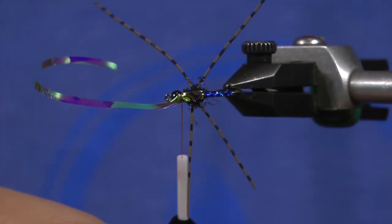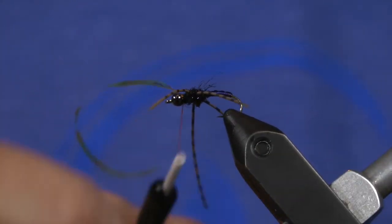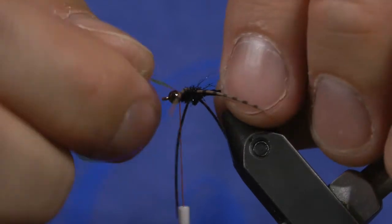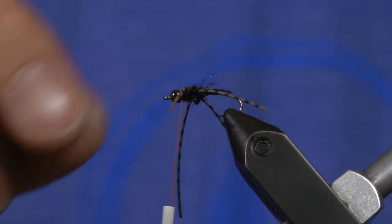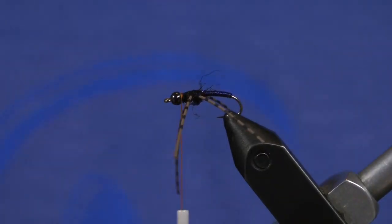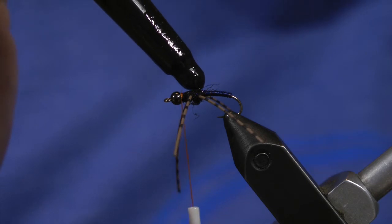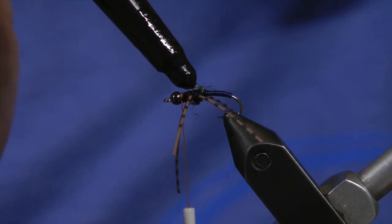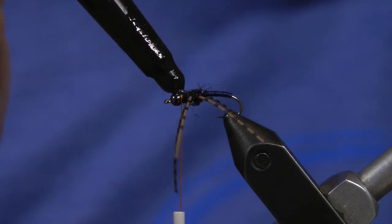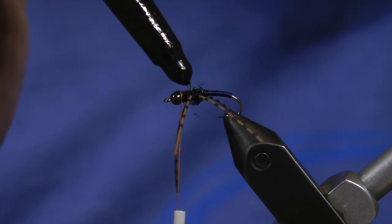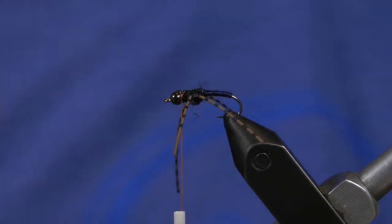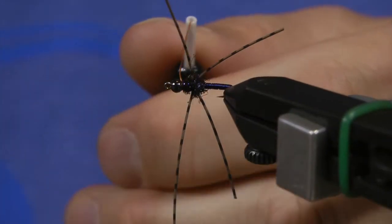You can see basically what that ends up looking like up top here. Cut that portion off, and then without even whip finishing, I add some of the more stout UV adhesives to create a big shell over the back.